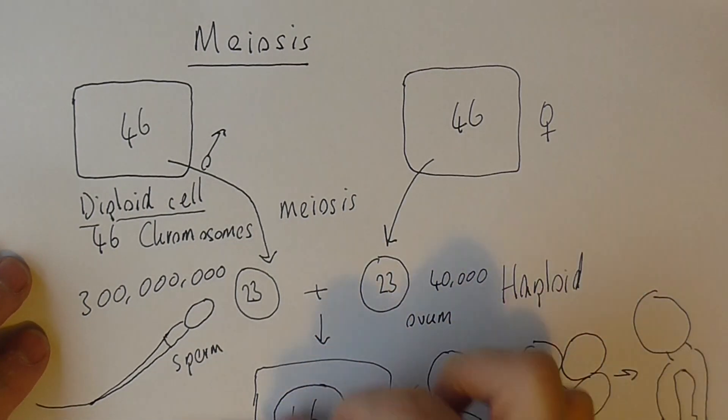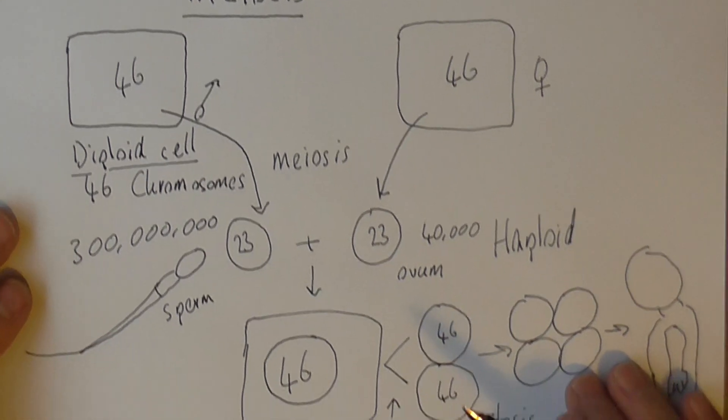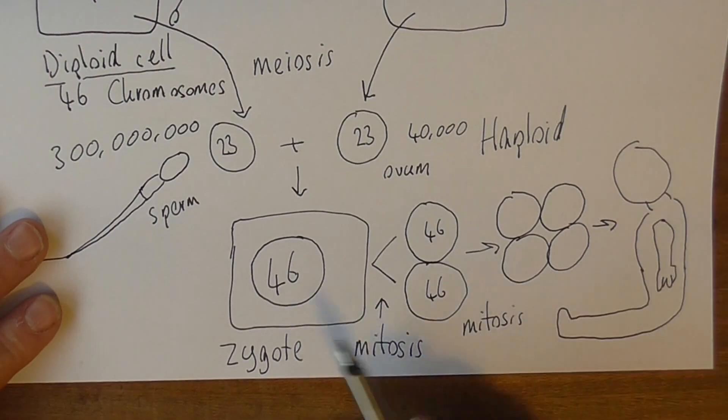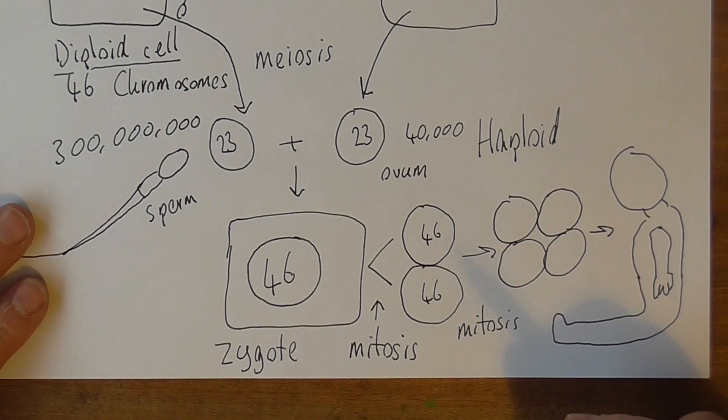But that only occurs because of sexual reproduction. So meiosis is absolutely essential to sexual reproduction. It builds variation into the propagation of the generations while conserving the diploid number of 46 chromosomes arranged in 23 pairs.